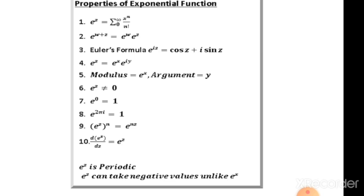The complex exponential e^z is periodic with period 2πi: since e^(z + 2πi) = e^z · e^(2πi) = e^z · 1 = e^z. This contrasts with the real exponential e^x, which is strictly increasing and never periodic. Furthermore, e^z can take negative values — for example, e^(πi) = cos(π) + i·sin(π) = −1 — whereas e^x is never negative.